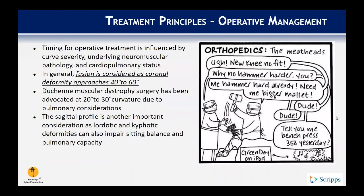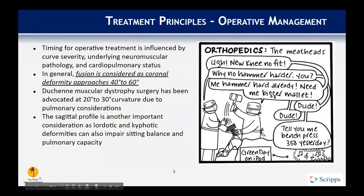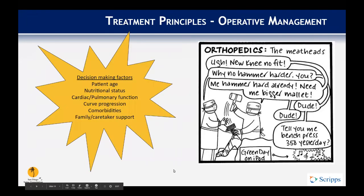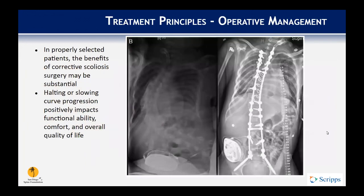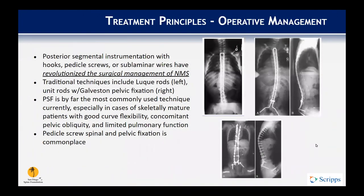For operative management, timing is influenced by curve severity, underlying pathology, and cardiopulmonary status. Fusion is generally considered as deformity approaches 40 to 60 degrees. Decision-making factors include age, nutritional status, cardiopulmonary function, and family and caretaker support. Corrective surgery in properly selected patients can impact functional ability and quality of life. Posterior segmental instrumentation has, over the last 20 to 30 years, revolutionized the treatment of these patients.